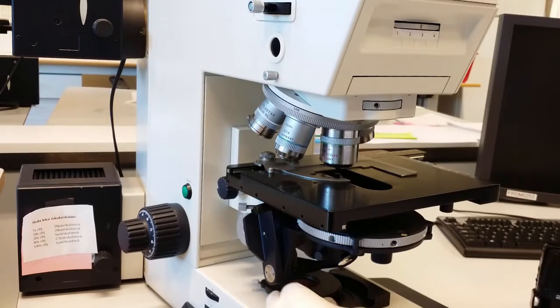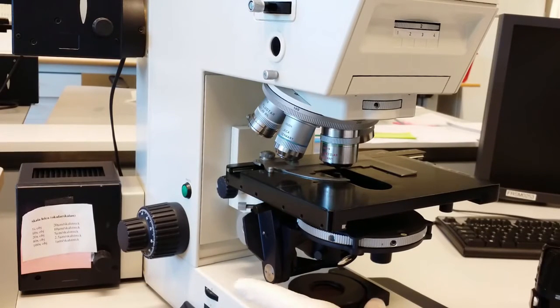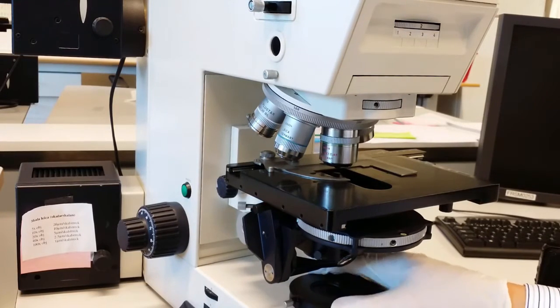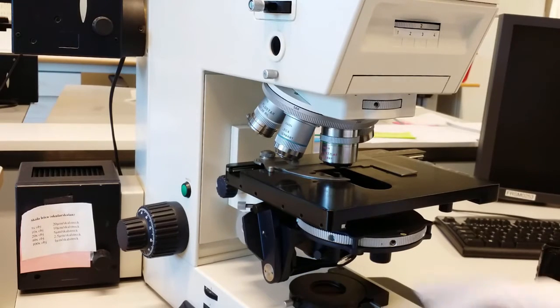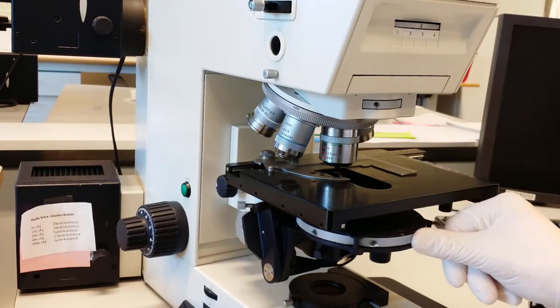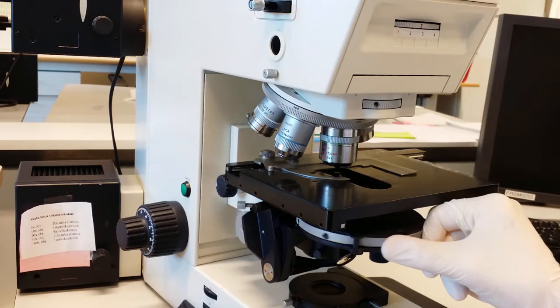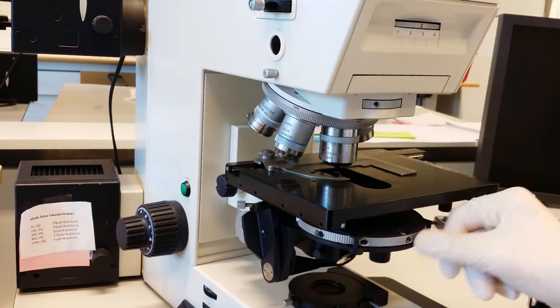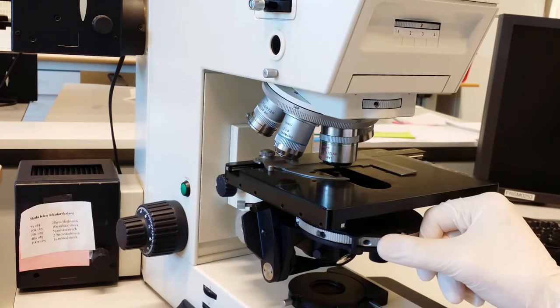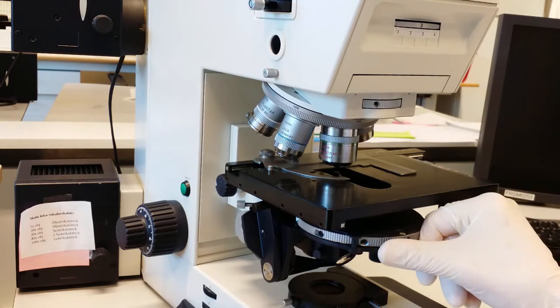So here you have the polarization filter in the bottom that you can put in like this. You can adjust the angle of the polarization with this wheel. Here you choose the aperture of the condenser. Usually you have different apertures that match the objective. So here it says D, that's for the dark field imaging.